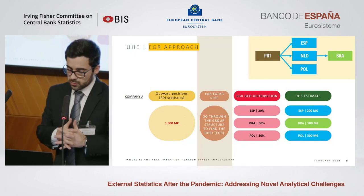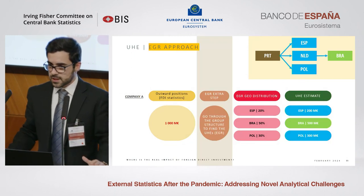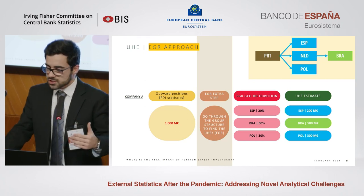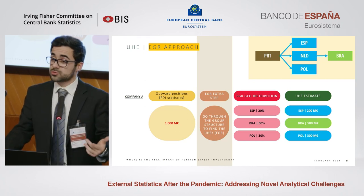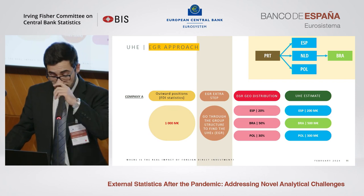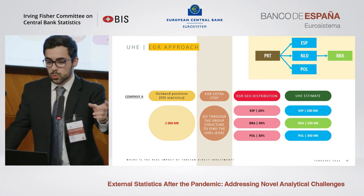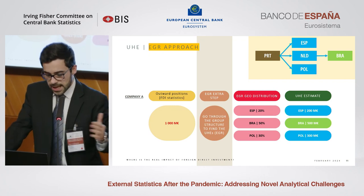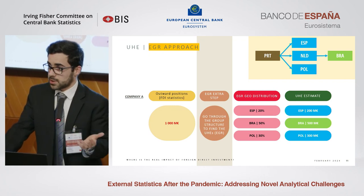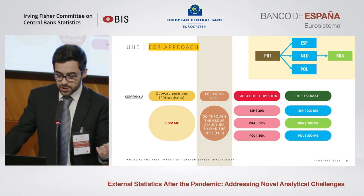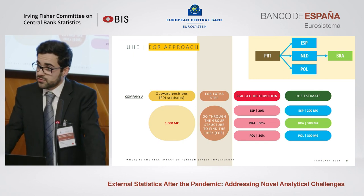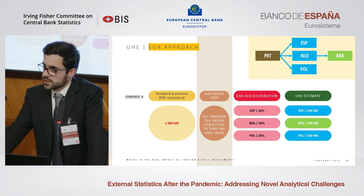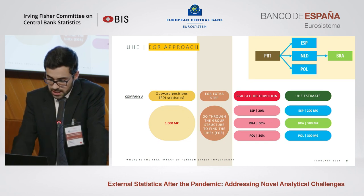When we move to the EGR approach, the process is similar, but with an additional step because we have access to the group structure. We go through the group structure until we find the ultimate host economy, which can be either the first operating unit or the last unit in the investment chain. As shown in the simple example, we will have different geographic allocations depending on the approach used.